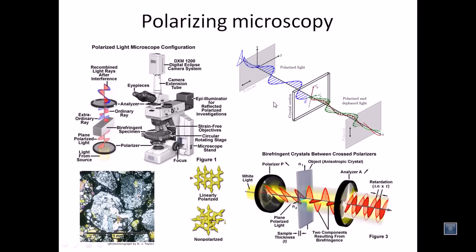Let us talk about polarizing microscopy — what it is and why we call it that, what its features are, and how it differs from the conventional light microscope. We will also talk about birefringence, which plays the most important role in polarizing microscopy, then the setup and mechanical apparatus, and finally the principle and its applications.